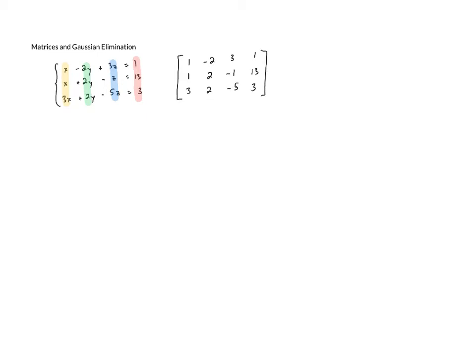And this is called an augmented matrix. In general, a matrix is an array of numbers specifically looking like this. We usually put them in brackets. So this is a 3 by 4 array of numbers, or a 3 by 4 matrix, which means that there are 3 rows and there are 4 columns.